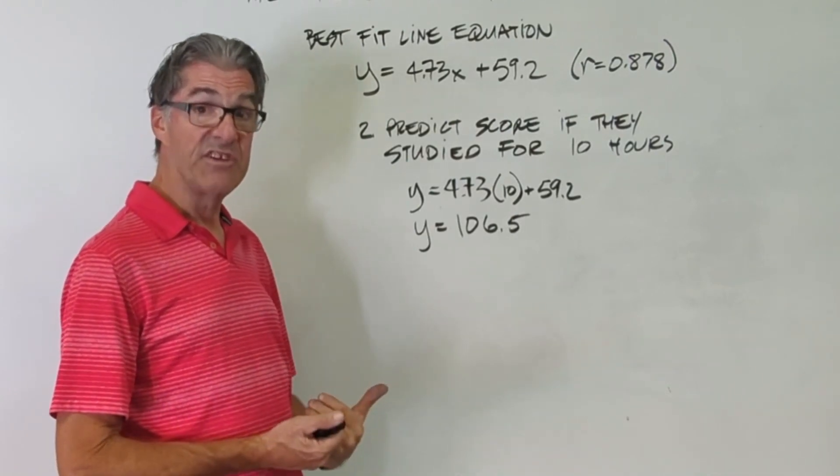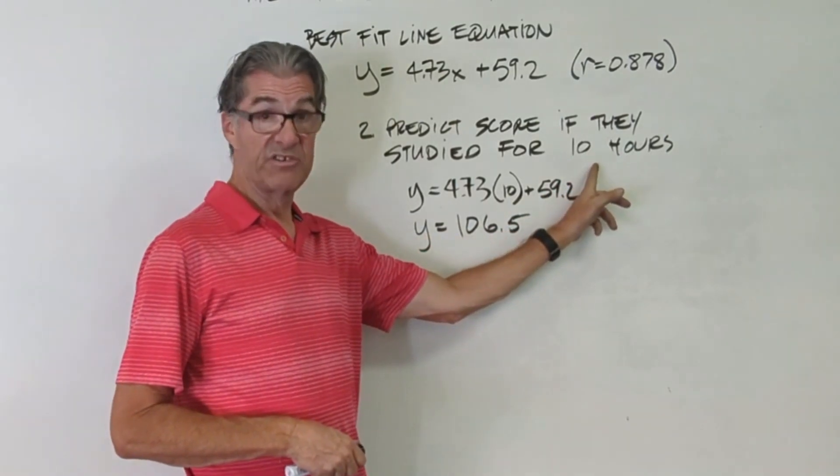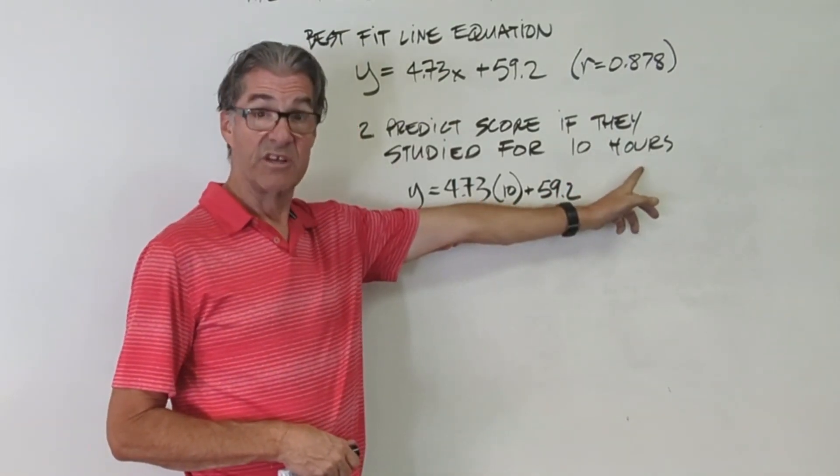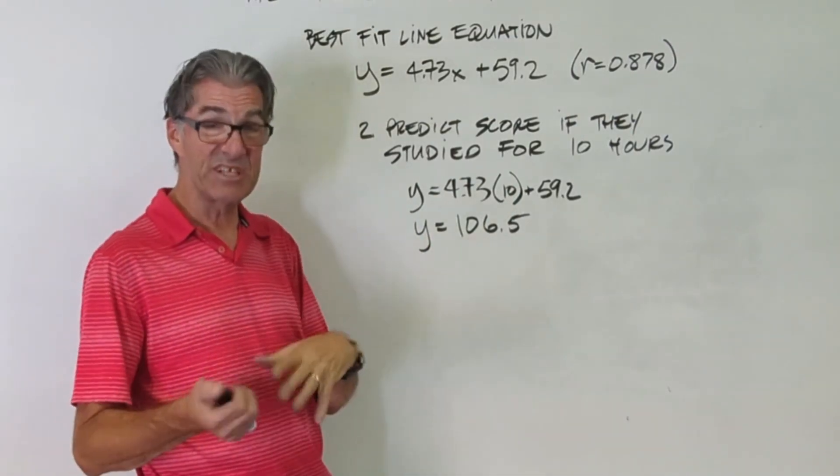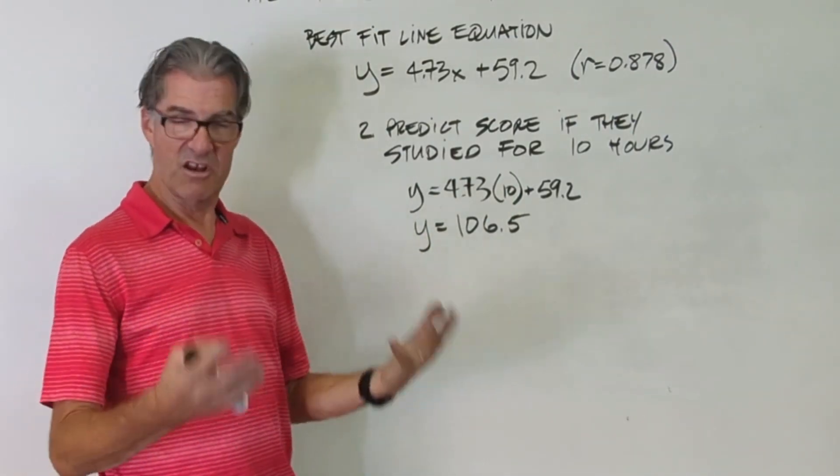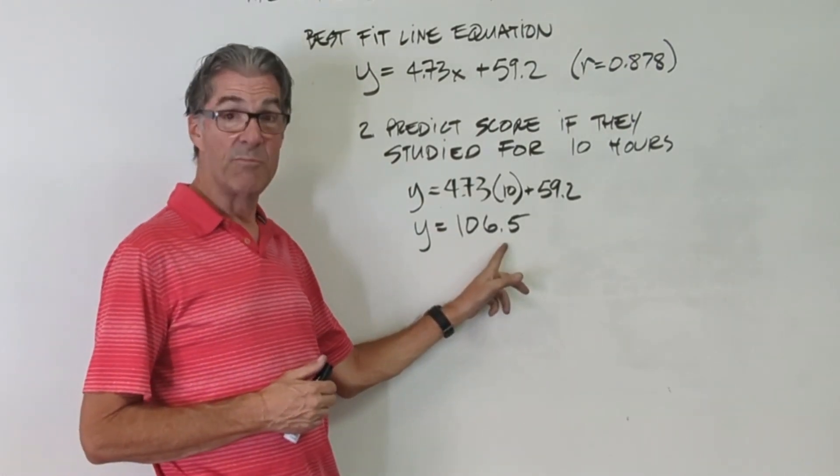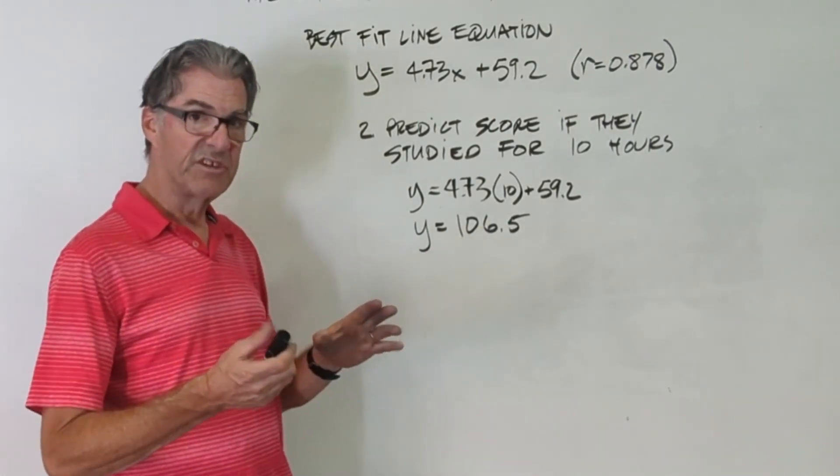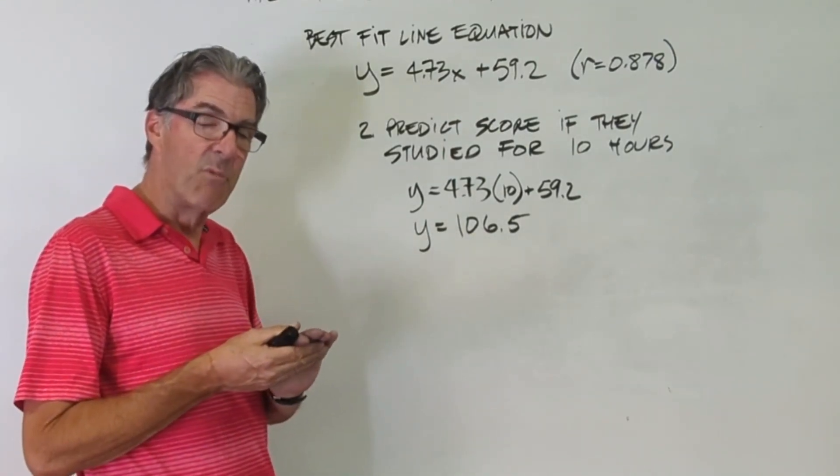If you remember, our data set only went to eight hours, but we're going to 10 hours. And so 10 hours is not going to work. And it also shows up here, you can't get 106%, assuming no extra credit and all that kind of stuff. So we've actually gone above a reasonable result. And the truth is, there's going to be a point of diminishing returns. As you study more and more and more, you're not going to keep increasing your score by the same amount.